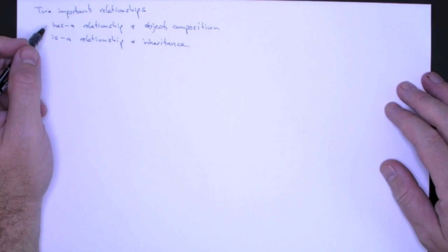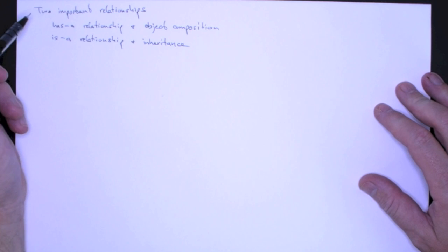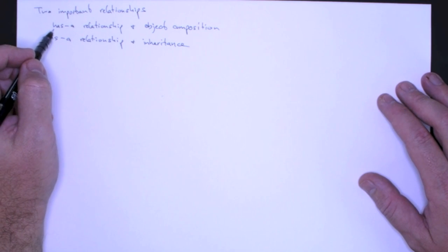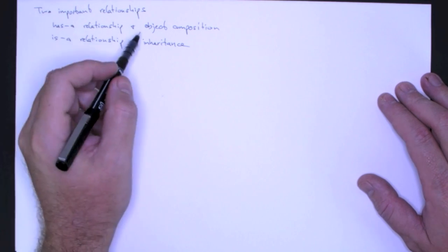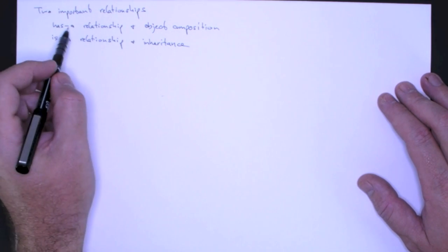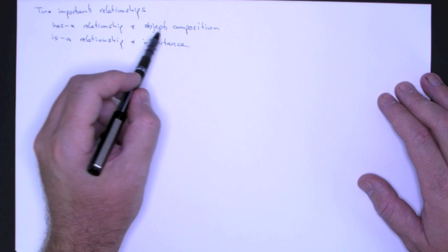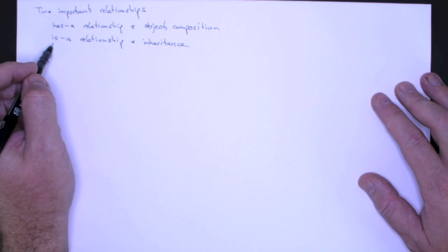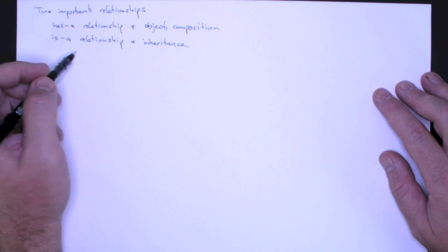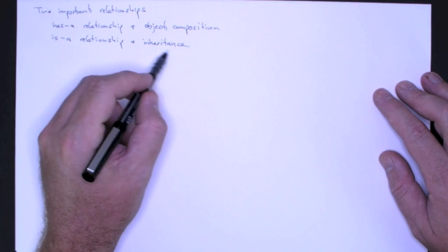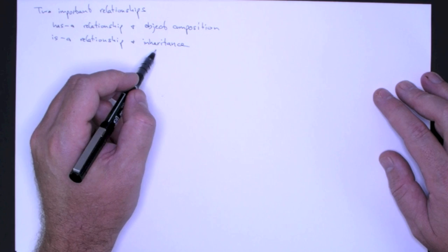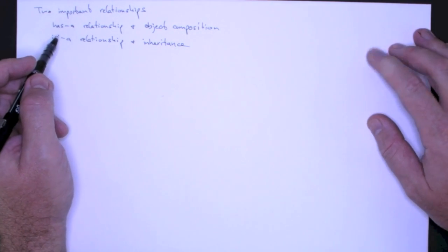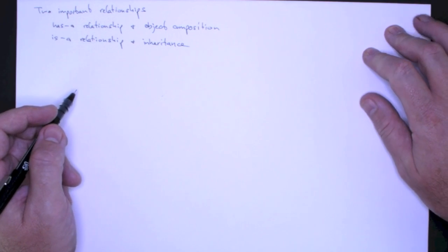In object-oriented design, analysis, and programming, there are two very important relationships. The first is the has-a relationship, which we capture in object-oriented programming using object composition. The second important relationship is the is-a relationship, which we capture using inheritance. We'll get to inheritance later, but I want to explain these two relationships. We'll spend a lot of time doing object composition.